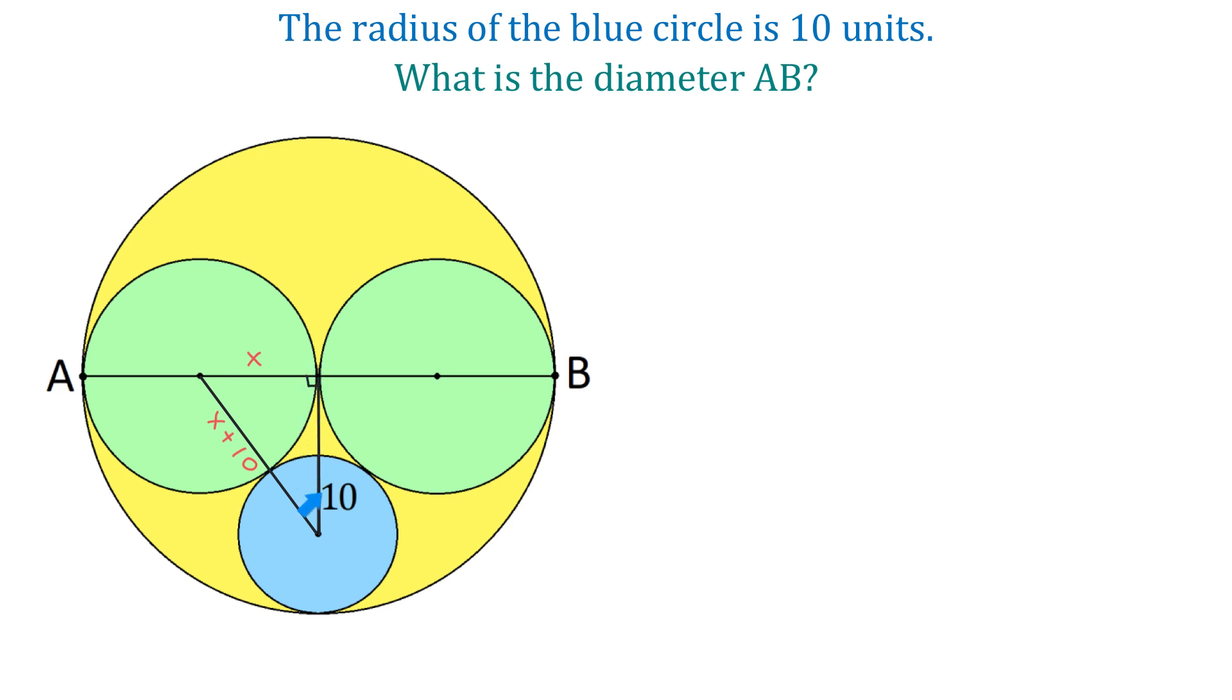Now, what about the right side? This side will be 2X minus 10. And this is because if the radius of the green circle is X, then the radius of the yellow circle is 2X. So if we connect the center of the yellow circle with this point of tangency, then this distance will be 2X. And now, to find this side of the triangle, we will take the radius of the yellow circle, which is 2X, and subtract the radius of the blue circle, which is 10. Then this side will be 2X minus 10.